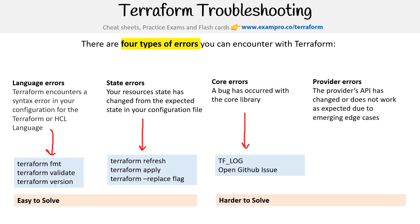For core errors, we might want to check out the logs. TF_LOG is basically the environment variable that controls where log files are stored and whether logging is turned on — we have a whole slide on that. Really, all you're going to do is use the logs to find information and then report a GitHub issue. Since all of Terraform is on GitHub, you just go there and someone will try to resolve it.